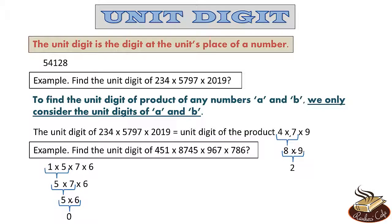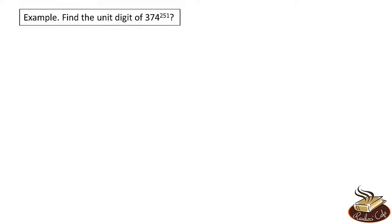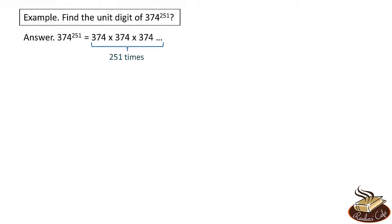So how do we find the unit digit of 374 raised to the power 251? 374^251 means 374 multiplied by itself 251 times. The first thing we know is that we only need to consider the unit digit of 374, which is 4 — we can ignore the 3 and 7. So we need to find only the unit digit of 4^251.